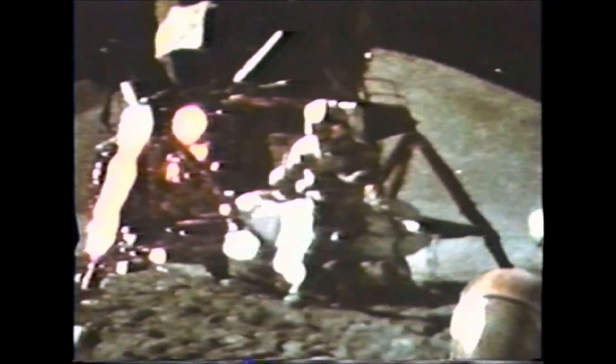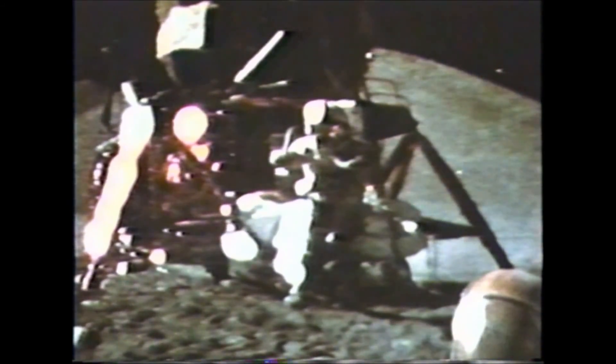Well, in my left hand, I have a feather. In my right hand, a hammer. Well, I guess one of the reasons we got here today was because of a gentleman named Galileo a long time ago, who made a rather significant discovery about falling objects in gravity fields. And we thought that where would be a better place to confirm his findings than on the moon. And so we thought we'd try it here for you. The feather happens to be appropriately a falcon feather for our falcon. And I'll drop the two of them here, and hopefully they'll hit the ground at the same time. How about that? It proves that Mr. Galileo was correct in his findings.